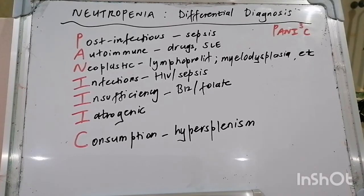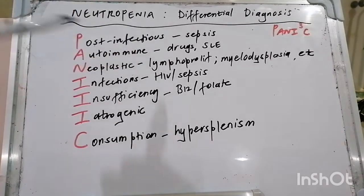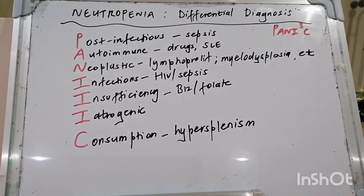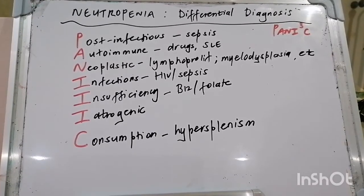How do we treat neutropenia? Look for and treat the underlying cause — commonly sepsis in our clinical setting. Get antibiotics on board, do blood cultures, and look for a source: urine MCS, sputum MCS, pus swabs, lumbar punctures, and so forth. There is also a role for myeloid growth factors such as granulocyte colony-stimulating factor (G-CSF) or GM-CSF as appropriate.